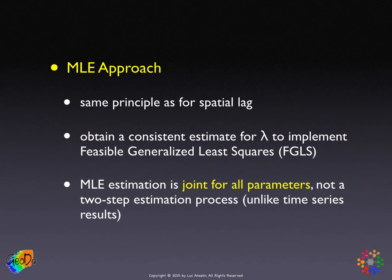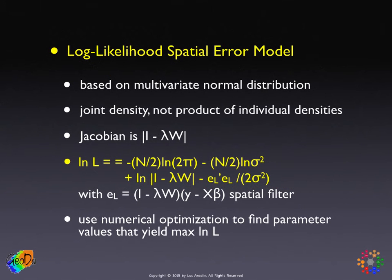Moving to actual maximum likelihood estimation, we use the exact same principle as for the spatial lag. We need a consistent estimate for lambda and plug it into the feasible generalized least squares expression. Maximum likelihood estimation cannot be carried out as a two-step process like in time series, where you take residuals and use an extra regression to get a consistent estimate for the autoregressive parameter. In the spatial case that doesn't work, so we have to be explicit. Because of the dependency, we must specify the joint likelihood, not the sum of individual likelihoods for observations.